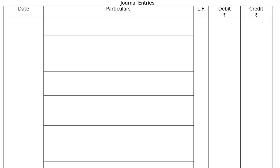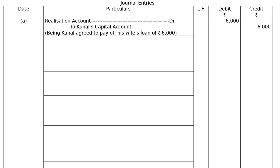Part A: Kunal agreed to pay off his wife's loan of Rs.6,000. The wife's loan is on the credit side and we have to pay it or take it over on the debit side. Hence, Realization Account is debited to Kunal's Capital Account.